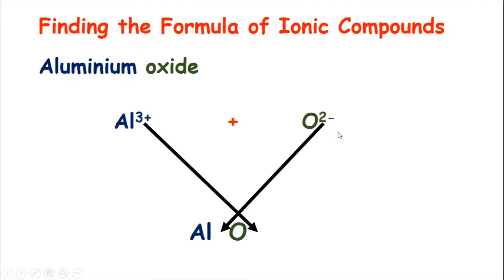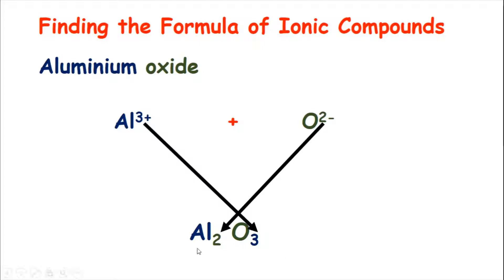What we're going to do now is really simple. We take this number up here and move it down at the end of the arrow. There's a 2 up there because it's O2- and we put the 2 next to the Al for aluminium. Then we take the 3 from Al3+ and move it down next to the O. Those numbers down here need to be subscript. And now we have the formula for aluminium oxide: Al2O3.